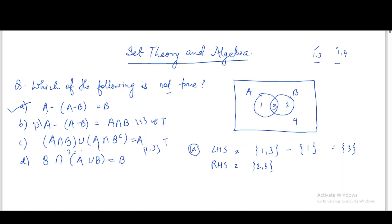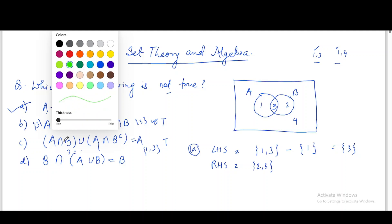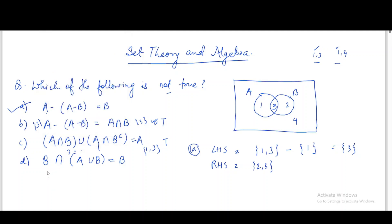For option (d), B is {2, 3}. A union B is {1, 2, 3}, and B intersection (A union B) gives {2, 3}, which equals B. So left-hand side and right-hand side are both equal — it is also true. So option (a) is the only false statement and is the correct answer.